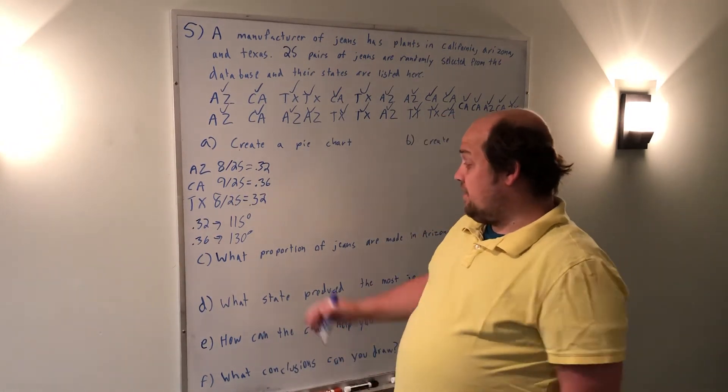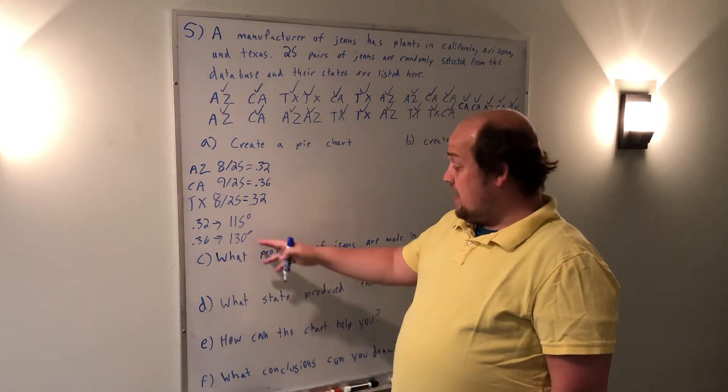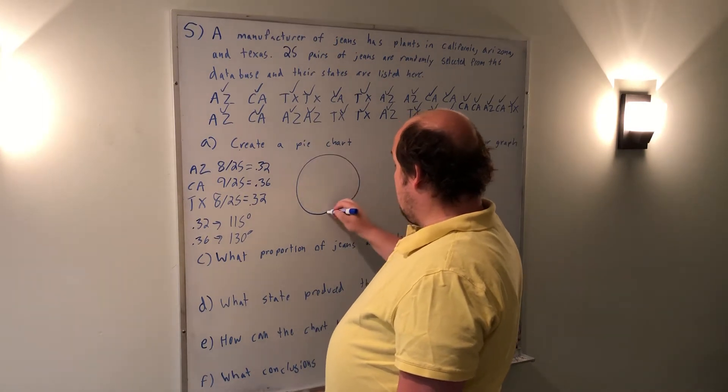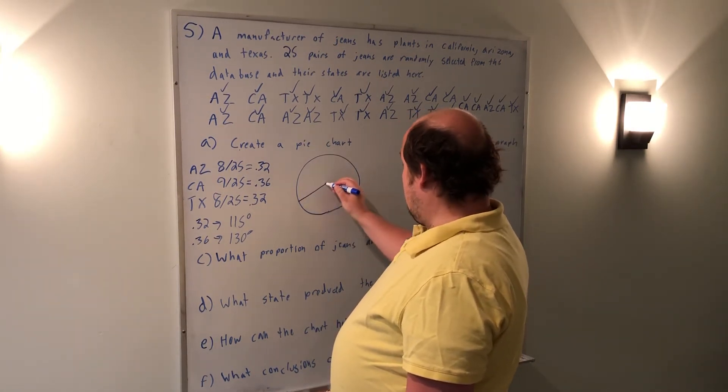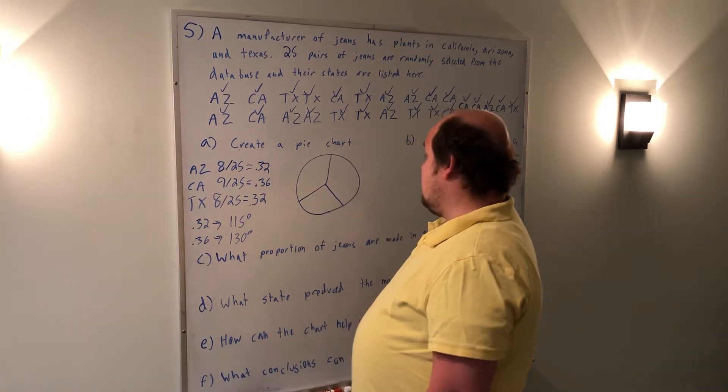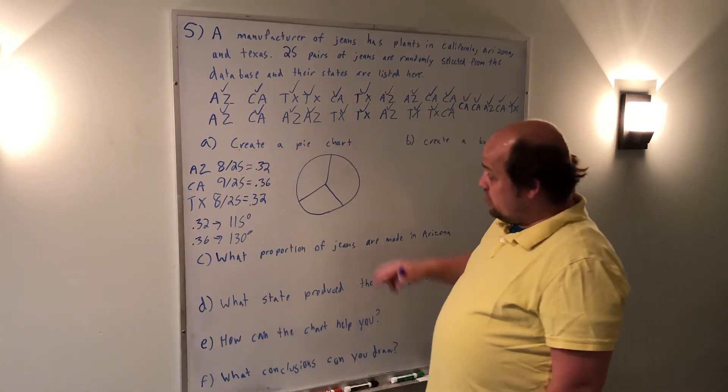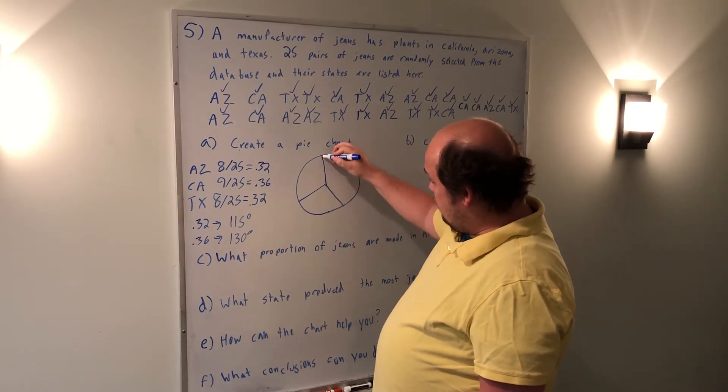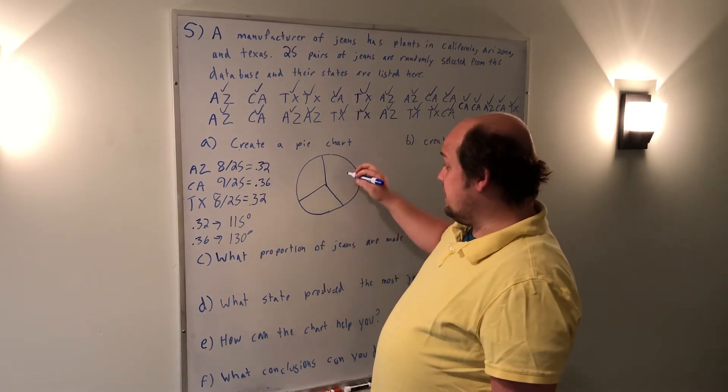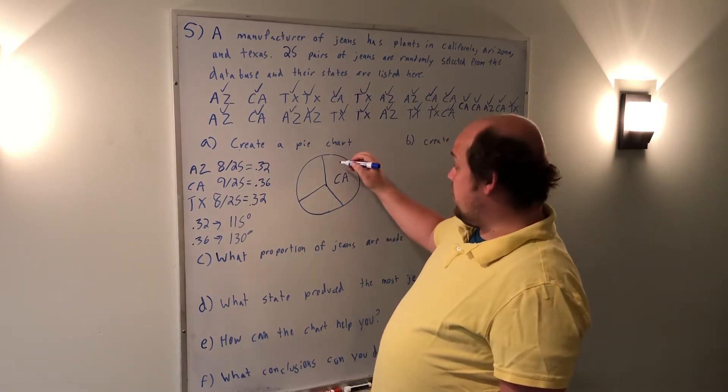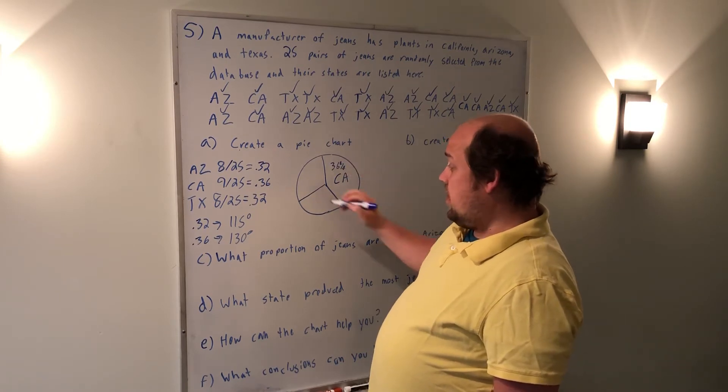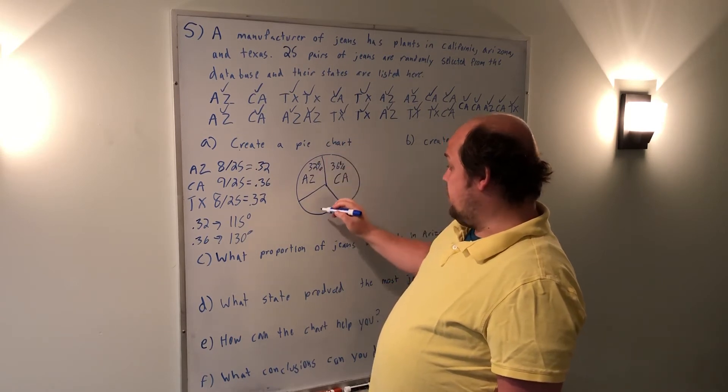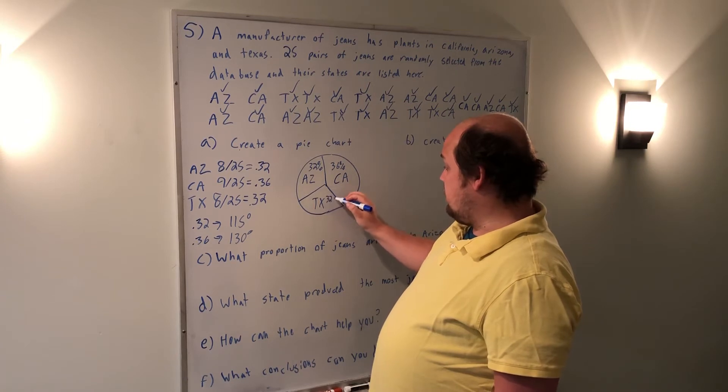But basically what that tells me is I'm going to have two pieces that are almost a third of the pie, and then one piece that's just slightly large. So when I go to make my pie chart, I'm going to start out with about three equal slices. Then I'm going to say I want to make one of these just slightly larger than the others. So I'm going to make this slice just slightly larger. Now I'm going to call this slice that's the biggest one CA. I'm going to write 36% on it. I'm going to call this one AZ, write 32%. And I'm going to call this one TX, and write 32%.